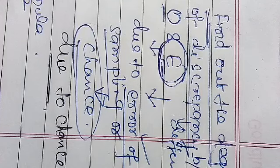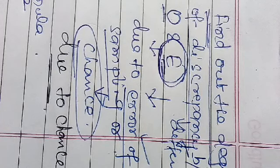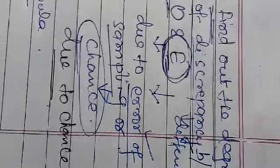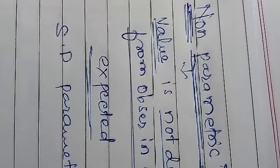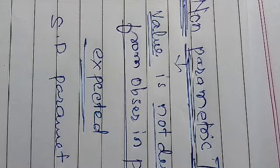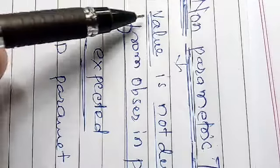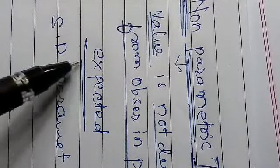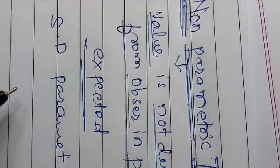We have to find out the chi-square of a given sample. Chi-square is also said to be a non-parametric test, because the value we get is not determined or derived from observations in the population.